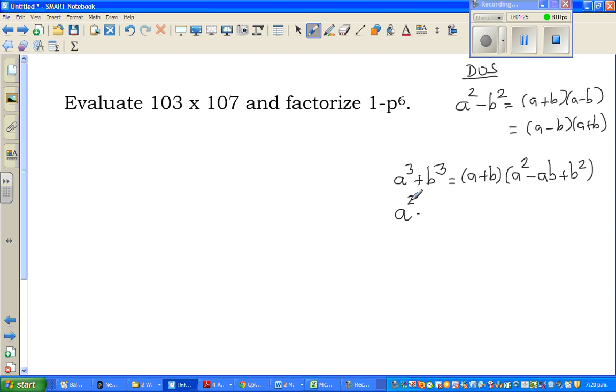If it is a cubed minus b cubed, the formula is almost the same but slight difference. It will be a minus b times a squared plus ab plus b squared. Now to remember this formula is very easy. If it is a cubed plus b cubed, you put plus here and you put a minus ab. A squared plus b squared is the same. The only difference is if it is plus here, you'll have a plus here, and if you have a plus here you have a minus here.